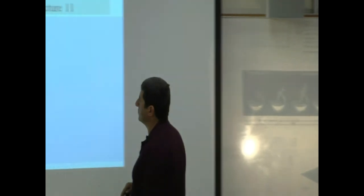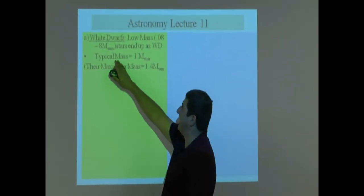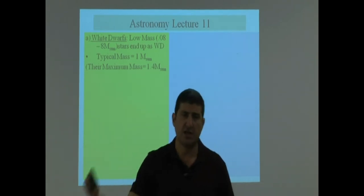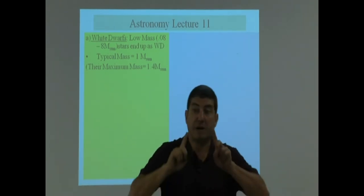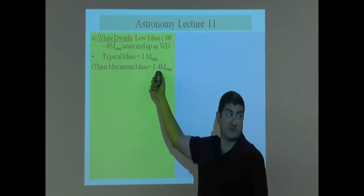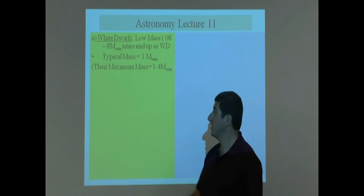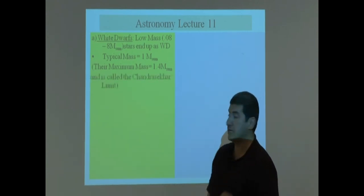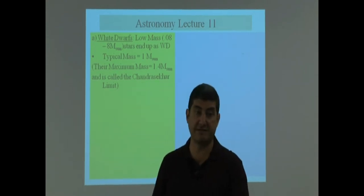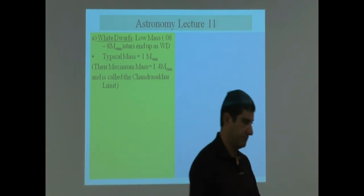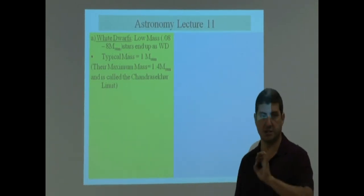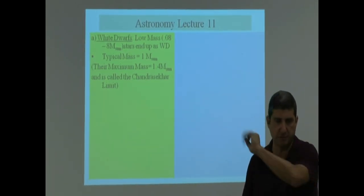So here are some properties of white dwarfs. Their mass is about the mass of the sun. It could be less than or equal to the mass of the sun, but it cannot be heavier than 1.4 times the mass of the sun. We mentioned that before. It's called the Chandrasekhar limit, named after famous Indian physicist Chandrasekhar. He came up with this number using the equations of physics.